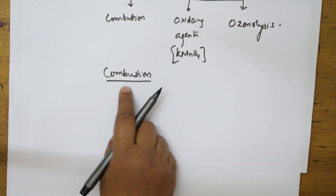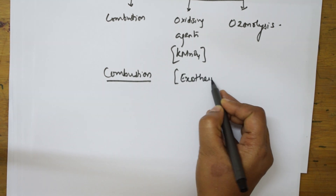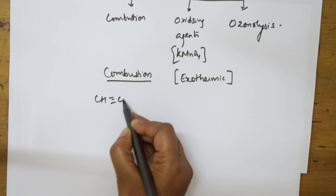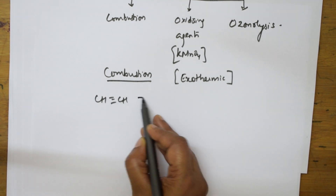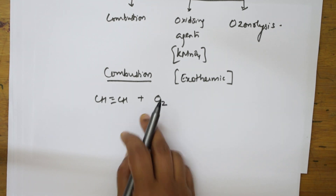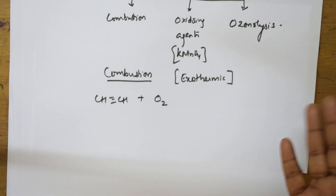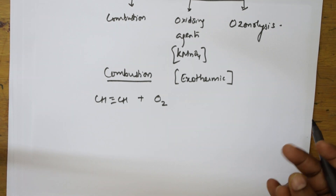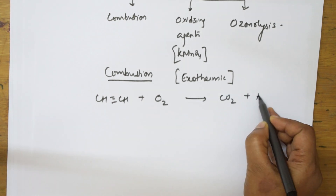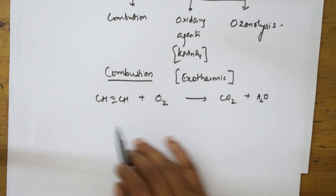Combustion is nothing but heating or burning in the presence of oxygen. Combustion reactions are always exothermic reactions — a large amount of heat is generated. When I take an alkyne and combust it in the presence of oxygen, all the combustion products are carbon dioxide and water, whether the compound is saturated or unsaturated. The reactions are highly exothermic in nature.